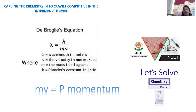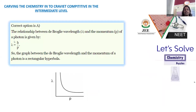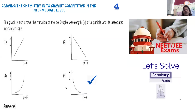The product of mass and velocity is momentum (p), so the equation becomes λ = h/p. Since h is constant, there is a reciprocal (inverse proportional) relationship between wavelength and momentum — momentum is in the denominator. As wavelength increases, momentum decreases, giving a curvature called a rectangular hyperbola, clearly shown in option number 4. For question number 4, option number 4 is the correct answer.